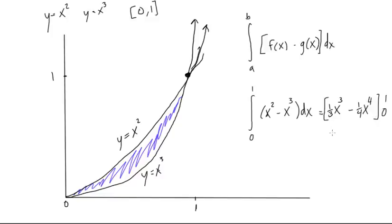And then when we substitute in our 1 and our 0, it's going to look like this. We're going to substitute in here. It'll be 1 third times 1 cubed minus 1 fourth times 1 to the power of 4. This is going to be minus all of this again, but 1 third times 0 cubed minus 1 fourth times 0 to the power of 4.